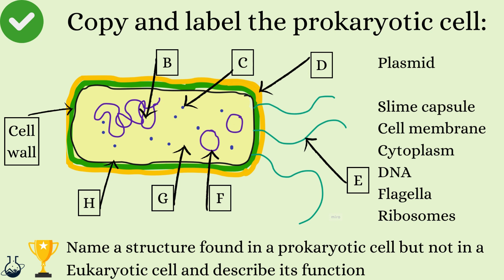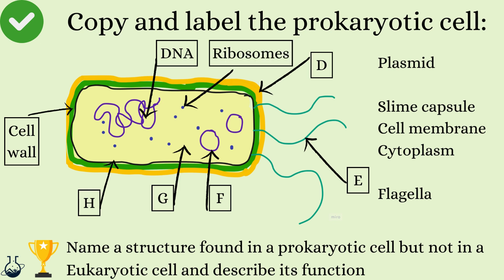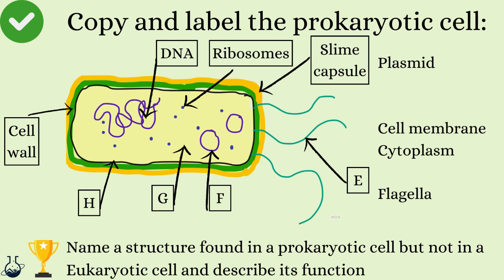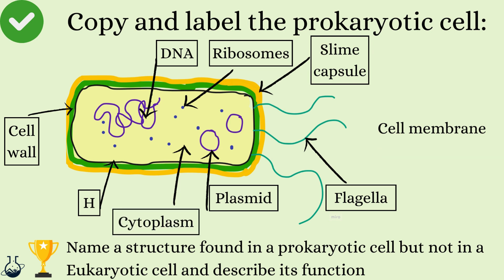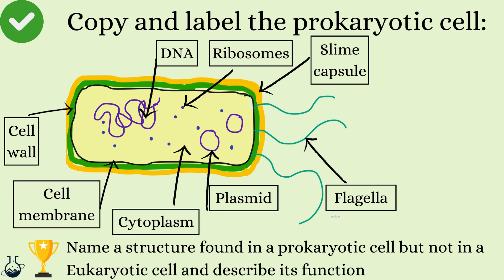A should look familiar as we have come across this previously with plant cells — this is the cell wall. B is the loop of DNA. C is the ribosomes. D is the slime capsule. E is the flagella. F is the plasmids. G is the cytoplasm and H is the cell membrane.